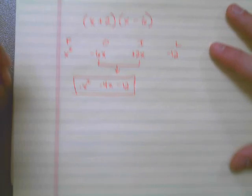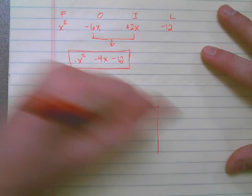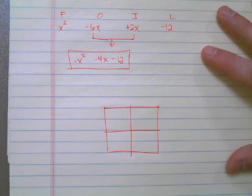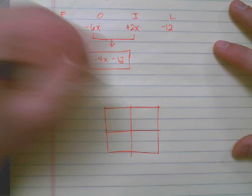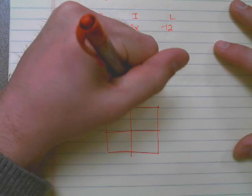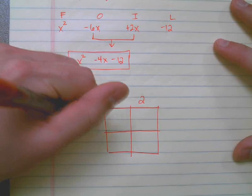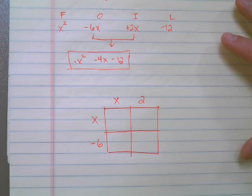I take one of the terms, x and a positive 2, and I put it on top. I take the other term, x and a -6, and I put it on the side.